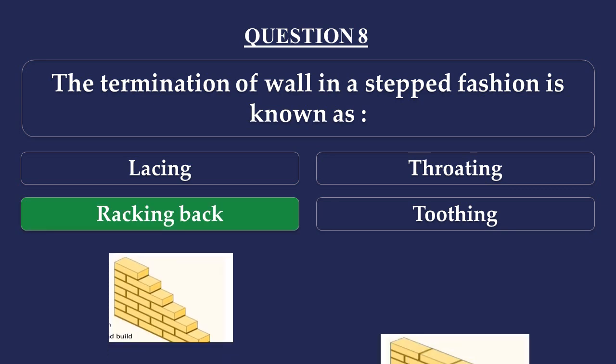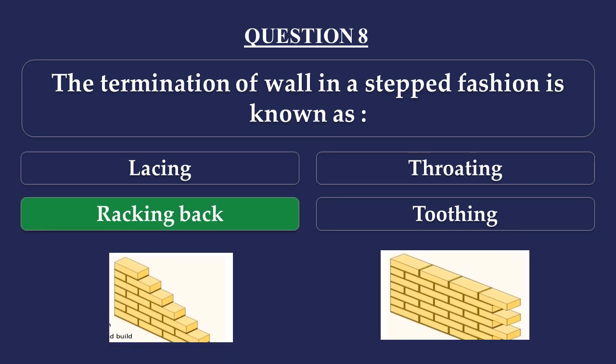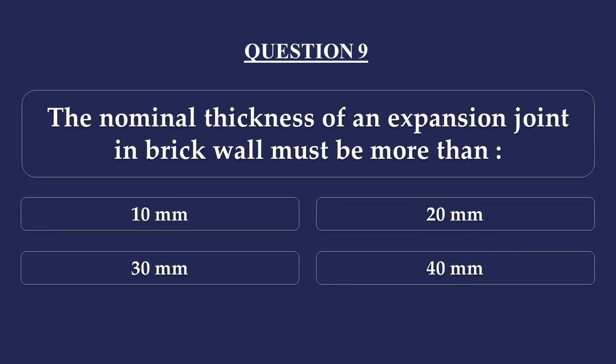Question number 9. The nominal thickness of an expansion joint in a brick wall must be more than: Option A - 10mm, Option B - 20mm, Option C - 30mm, Option D - 40mm. The expansion joint nominal thickness answer relates to standard brick masonry specifications.